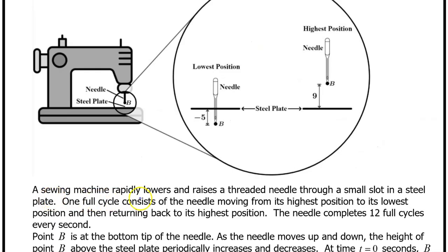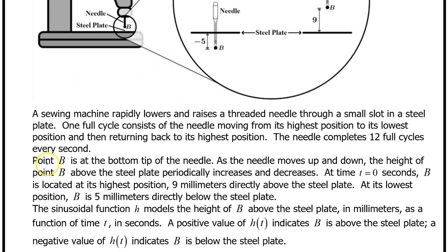A sewing machine rapidly lowers and raises a threaded needle through a small slot in a steel plate. One full cycle consists of the needle moving from its highest position to its lowest position and then returning back to its highest position. The needle completes 12 full cycles every second. Point B is at the bottom tip of the needle. As the needle moves up and down, the height of point B above the steel plate periodically increases and decreases.